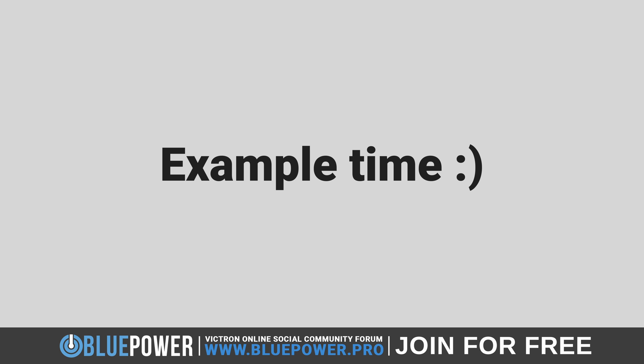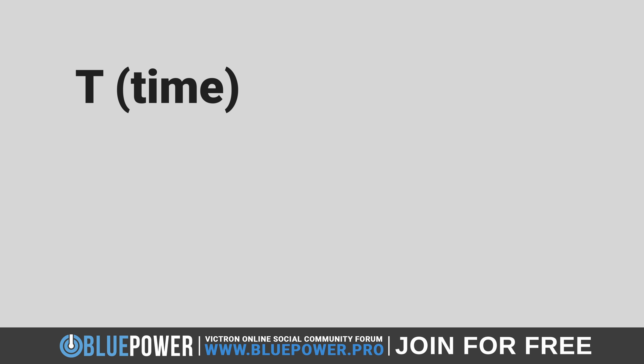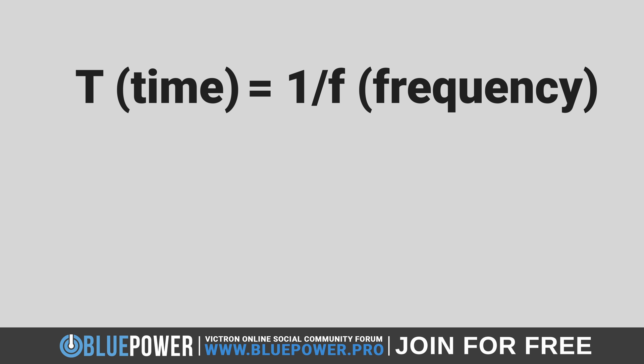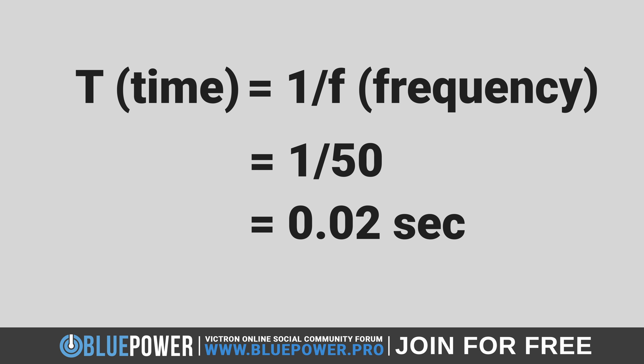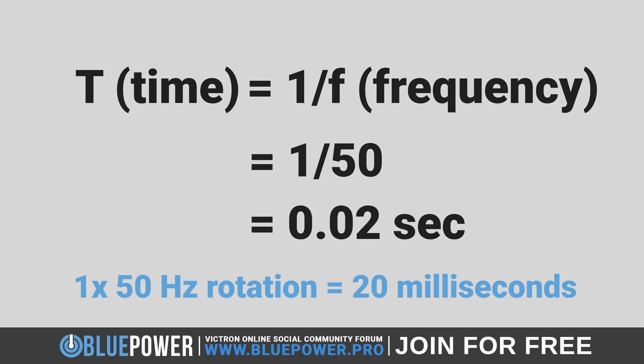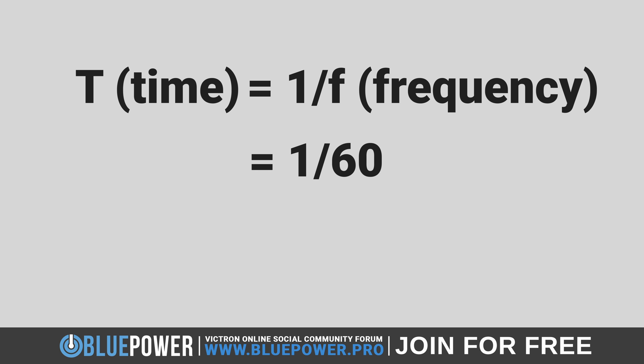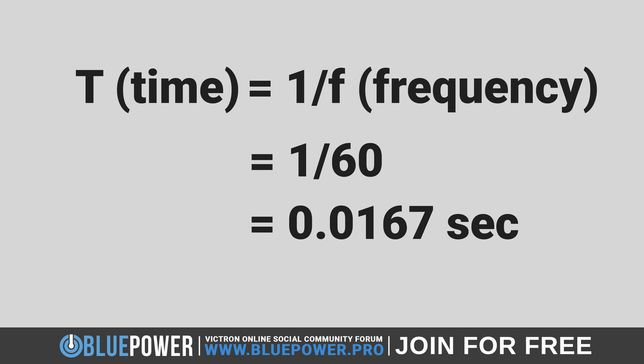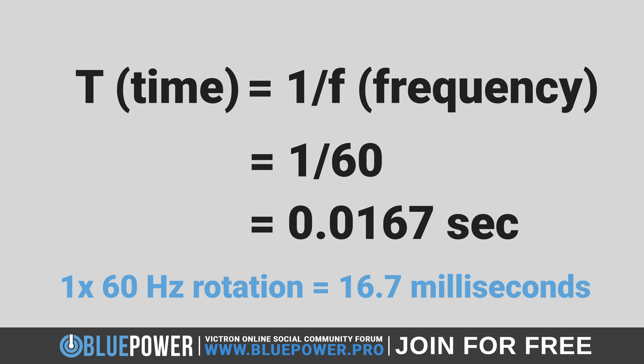Let's do some quick math, beginning with a 50 Hertz frequency. To calculate the time period T, we divide 1 by the frequency of 50 Hertz, which equates to 0.02. Therefore, for a 50 Hertz frequency, the time to complete one rotation is 0.02 seconds, or 20 milliseconds. We can then do the same for a 60 Hertz frequency by dividing 1 by 60 Hertz, which equates to 0.0167. Therefore, for a 60 Hertz frequency, it takes about 0.0167 seconds, or 16.7 milliseconds, for one complete rotation.